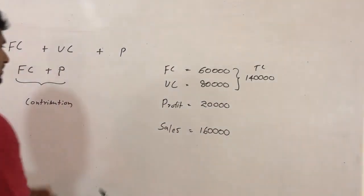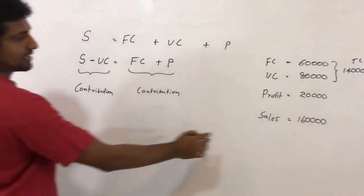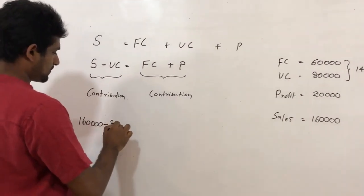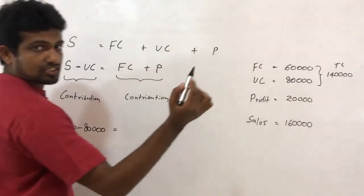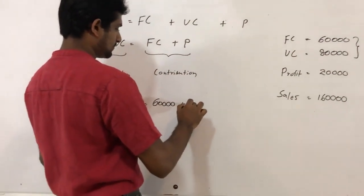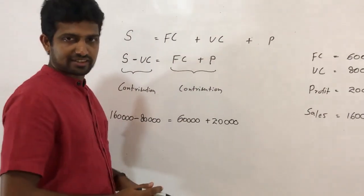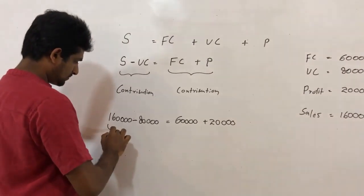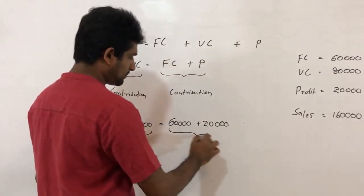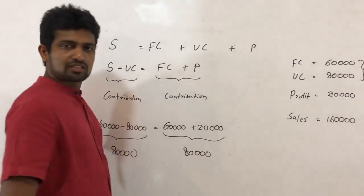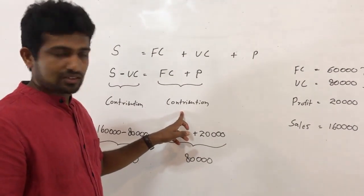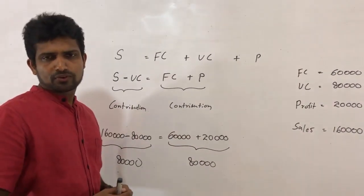Using the contribution relationship: sales of 160,000 minus variable cost of 80,000 equals fixed cost of 60,000 plus profit of 20,000. So 160,000 minus 80,000 is 80,000 — that is the contribution. And 60,000 plus 20,000 also equals 80,000 — that is also the contribution. So there are two methods to calculate contribution.